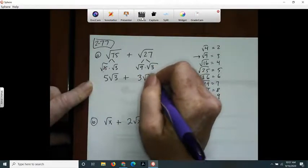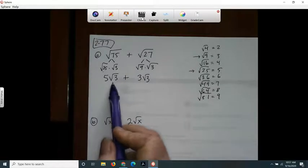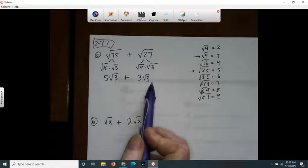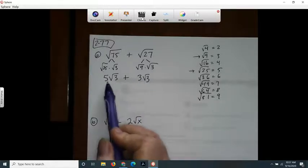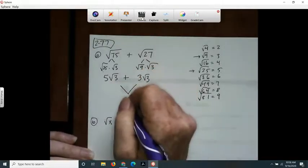Now, when I have radicals, and I have the same number under the radicand, then they're like terms, and I can combine like terms. So 5 plus 3 is 8. So 5 root 3 plus 3 root 3 is 8 root 3. That's the answer.